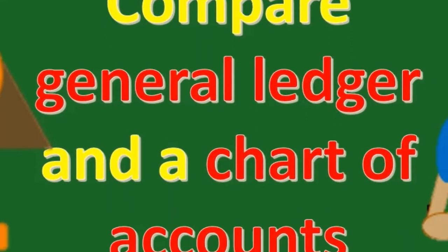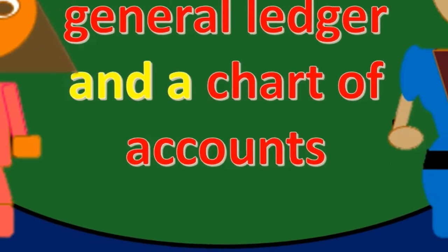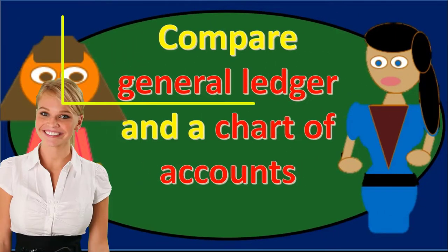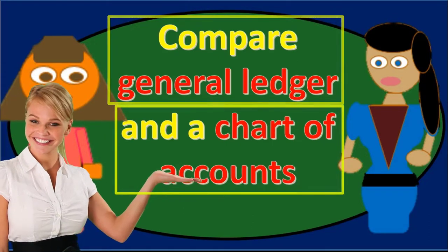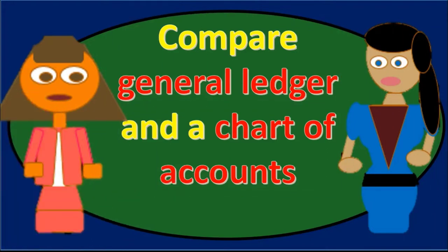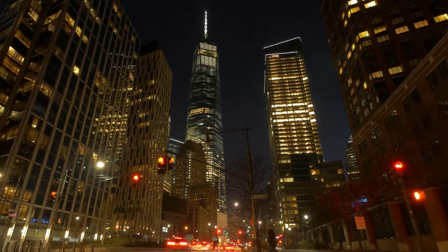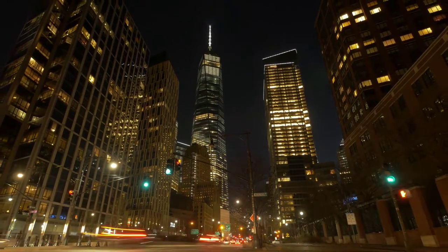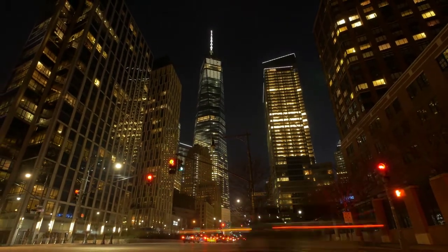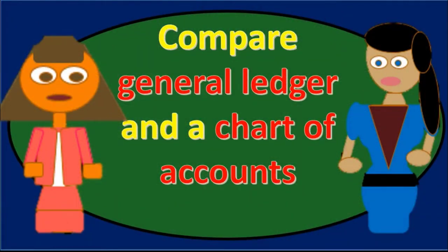If we compare and contrast the chart of accounts and the general ledger, note that the chart of accounts does not necessarily have any balances. We're just going to have a list of the accounts, possibly with account numbers depending on whether the company uses them. Account numbers are assigned labels so we can identify accounts by number rather than name, not to be confused with the balance in the account.